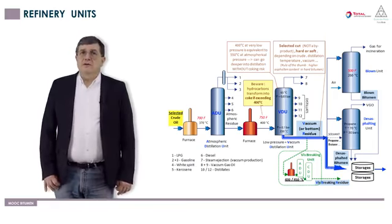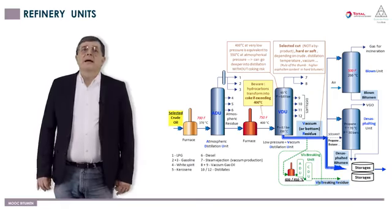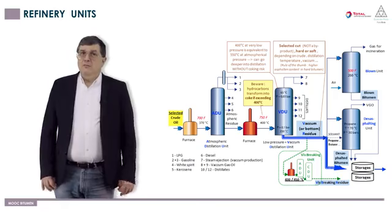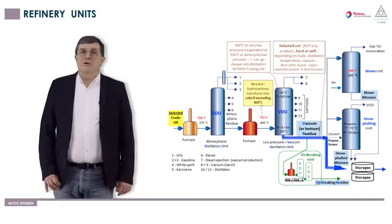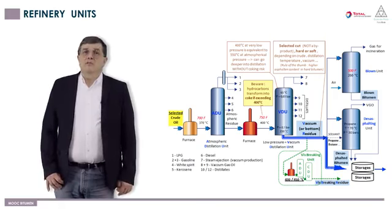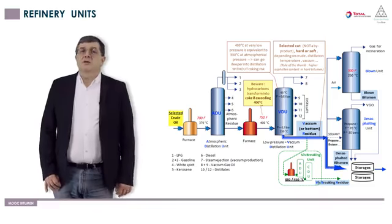Let's come to the three other possible additional units used to produce bitumen. If vacuum bottom is a soft bitumen, it can be desasphalted, removing oil in a liquid-liquid extraction at low temperature but high pressure, with help of propane or butane to produce desasphalted pitch, that is a hard bitumen, because of high asphaltene content.